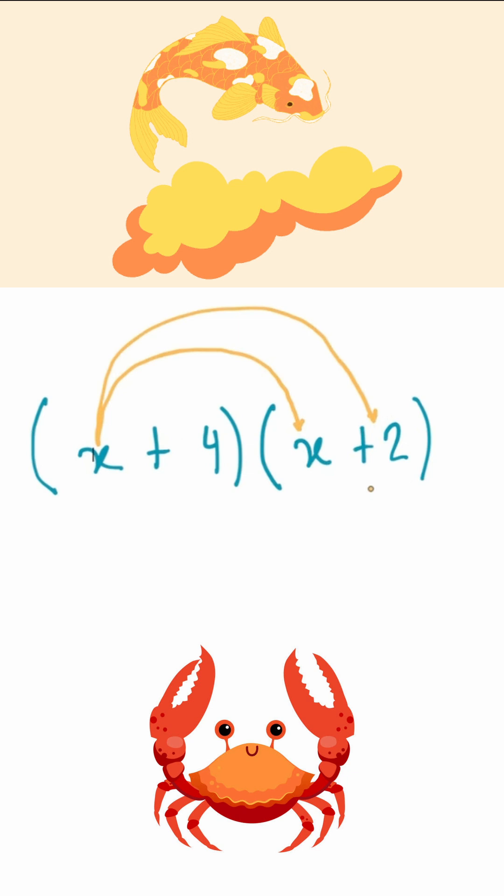The second half deals with this 4. The 4 is going to now multiply with the first term in the second bracket, which is x. And then the 4 will multiply with the second term in the second bracket, which is 2.